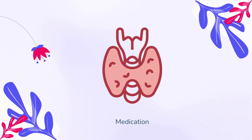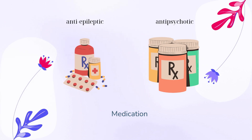Other treatments include certain medications to treat underlying conditions. For example, if you have hypothyroidism, which can cause anovulation, taking medication to treat hypothyroidism could also treat anovulation. Some medications, such as anti-epileptic drugs and anti-psychotic drugs, can cause anovulation, so your healthcare provider might adjust your current medications if you're trying to conceive. Never adjust or stop taking your medications without consulting your healthcare provider. Always follow the instructions on your prescribed medications.